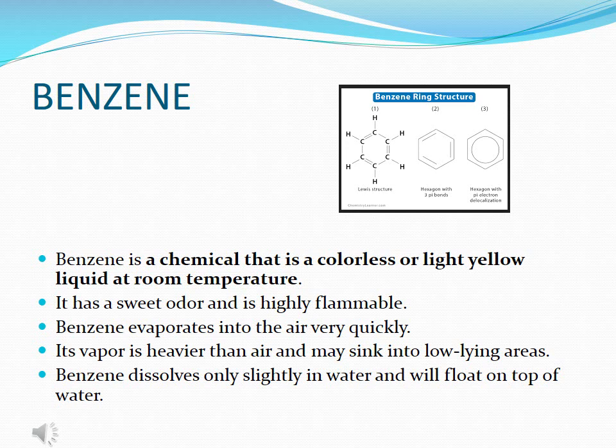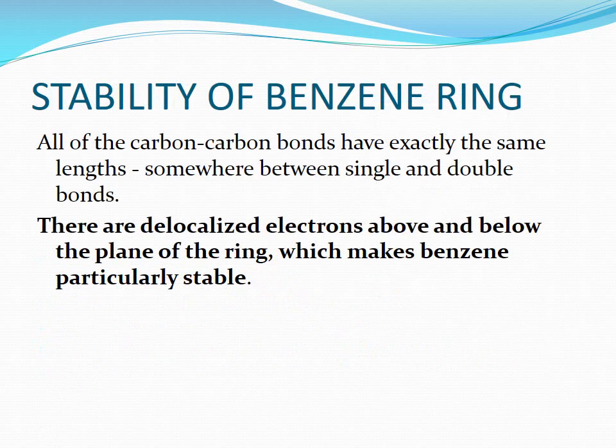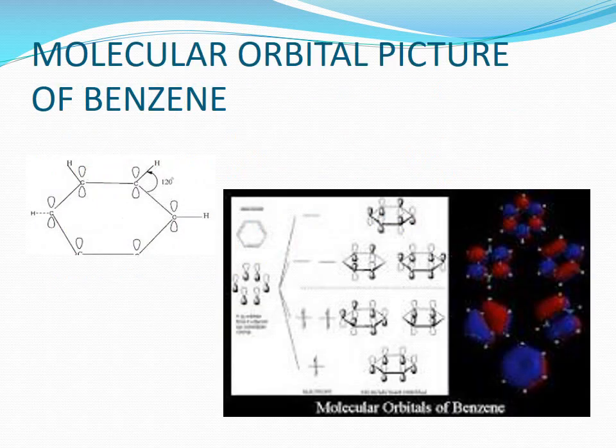It is the sweet smell and stability of the benzene ring. All the carbon-carbon bonds have exactly the same length, somewhere between single and double bonds. There are delocalized electrons above and below the plane of the ring, which makes benzene particularly stable. This shows the molecular orbital picture of benzene.